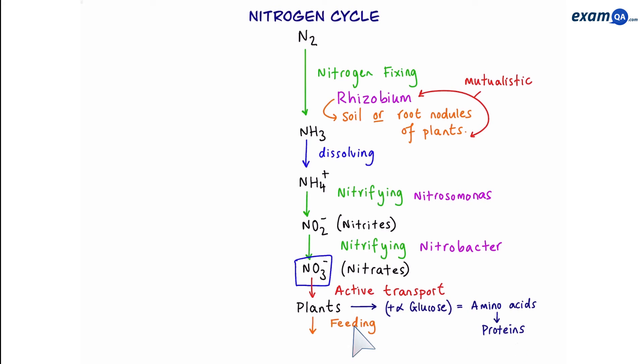Through feeding, these proteins then make their way into animals. We know nothing lives forever. So animals and plants eventually die and then nitrogen compounds get converted back into ammonia. This process is called ammonification and it's done by saprobionts. These are bacteria or fungi that love to feed on dead material.